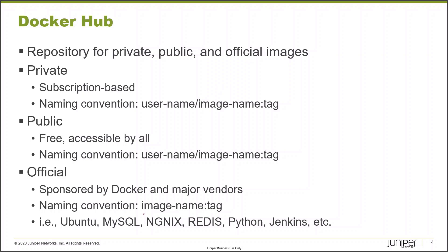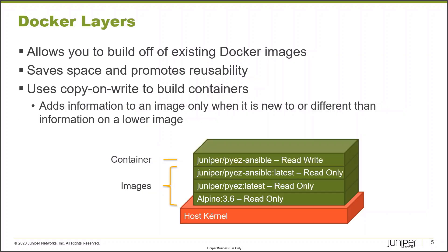Docker has a lot of functionality that helps reduce its footprint on your hardware. Docker layers is a really important concept when dealing with images. Whenever we're building an image definition in Docker, it's actually being built out in layers based on previously existing images. This helps save space and promote reusability. As an example, the Juniper PyEZ Ansible image — a Docker Hub image maintained by Juniper — contains PyEZ Python libraries for automating devices, as well as Ansible.